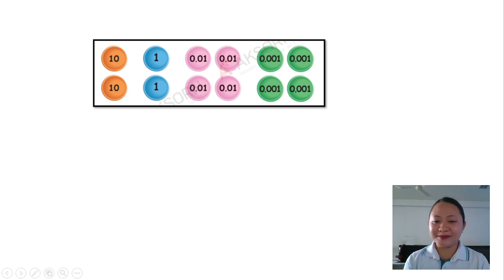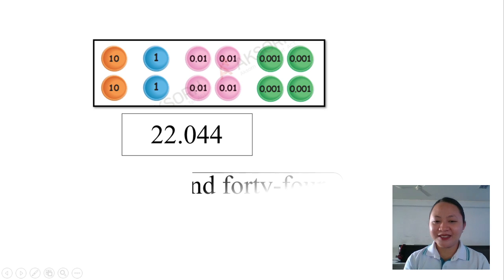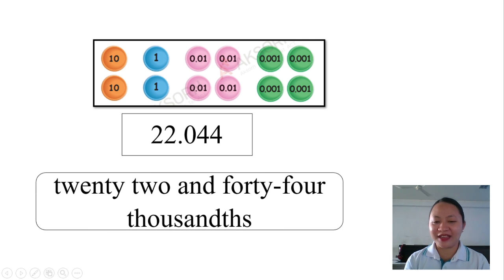Look at this picture. What decimals represented by the number disks? Excellent. It's 22.044. Or we read it as twenty-two and forty-four thousandths.